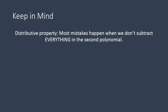Just a quick reminder of things to keep in mind. With subtraction, remember: one, the distributive property — most mistakes happen when we don't subtract everything in the second polynomial. You have to distribute that negative sign to every single term inside the second set of parentheses. Also remember to only join like terms. You can practice this by remembering the fruit analogy — comparing apples to apples. I hope this lesson was helpful for you. Have a wonderful day.